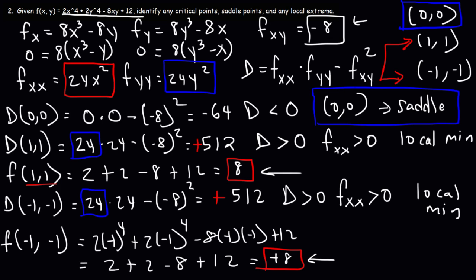So now you know how to identify any critical points, saddle points, and local extreme values. The saddle point is the origin, the critical points are (1, 1) and negative 1, negative 1.